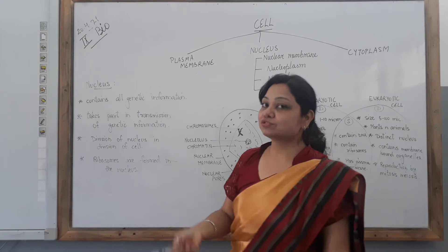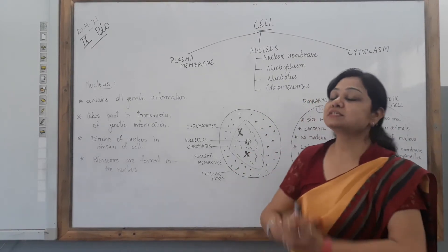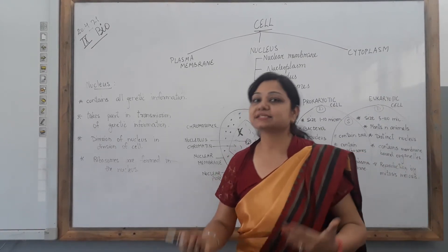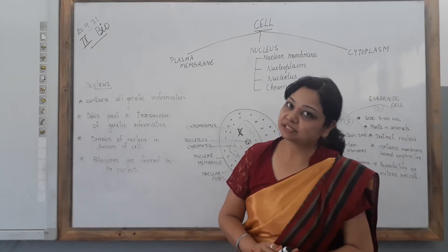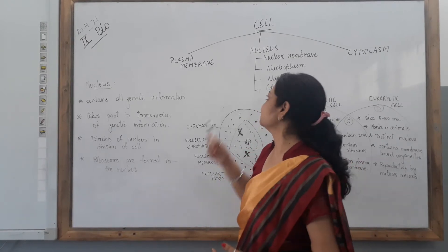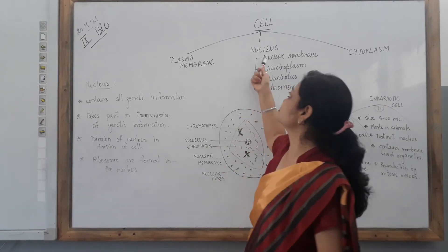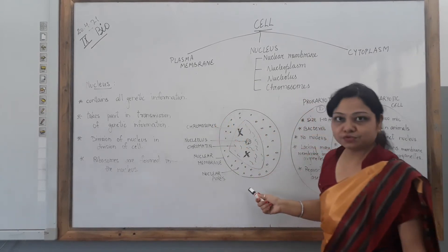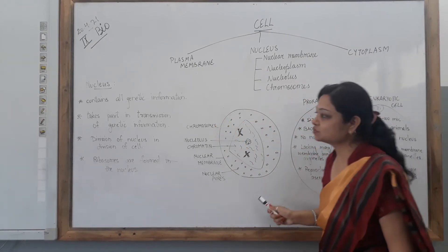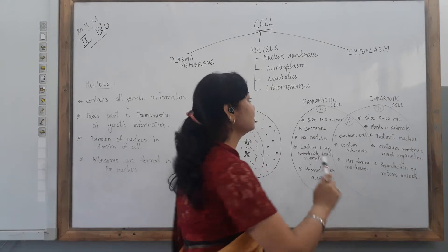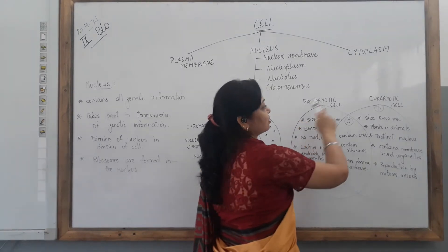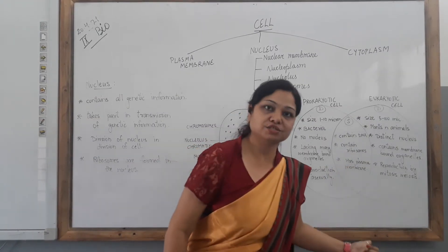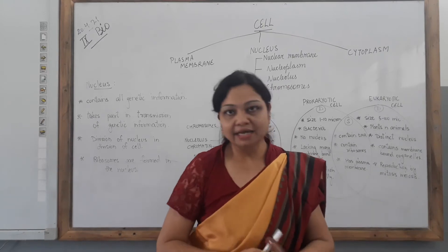Yesterday we also discussed the differences and similarities between plant cells and animal cells. So today we will be discussing about the nucleus — its basic structure, the ultrastructure of nucleus, as well as the differences and similarities between prokaryotic and eukaryotic cells. Let's start.